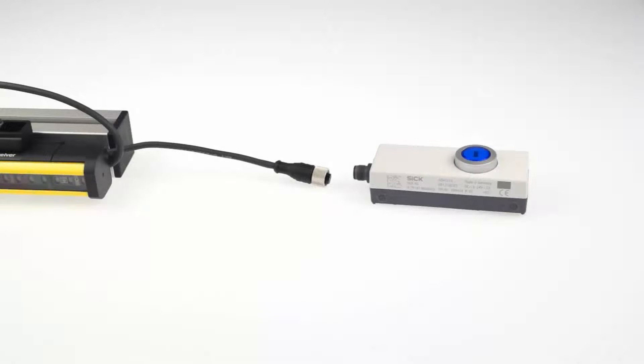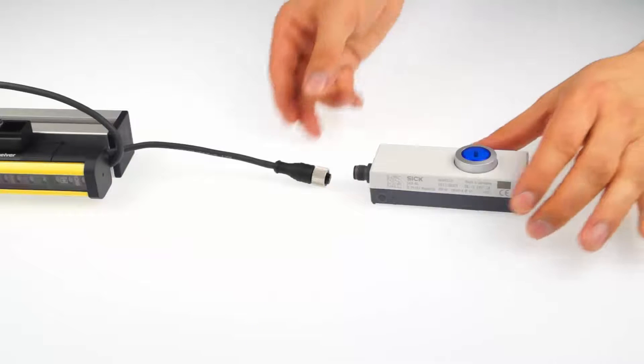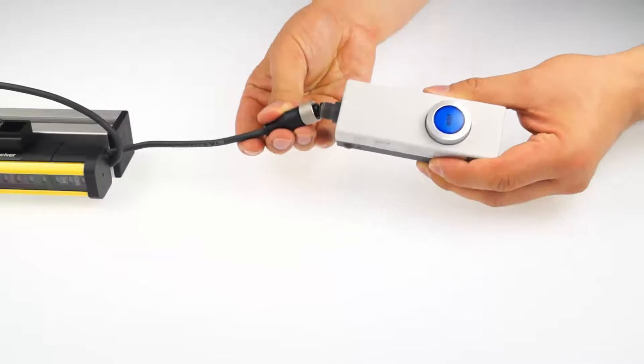If you now want to add a local restart interlock to the system, it is just as easy as the cascading. The reset button is connected to the last receiver in your cascade. Therefore, you also need a system plug with an extension connection here.